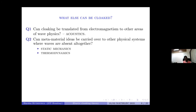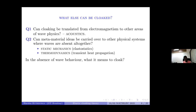The second question is: can these metamaterial ideas — assigning exotic coating properties to certain regions — also be extended to physical systems where the phenomenon of waves is absent altogether? For example, static mechanics, which has no waves: that is elastostatics. Or thermodynamics, like the heat equation or the Poisson equation — there are no waves present. Can you still apply metamaterial ideas there? And in the absence of wave behavior, what does it mean to cloak?